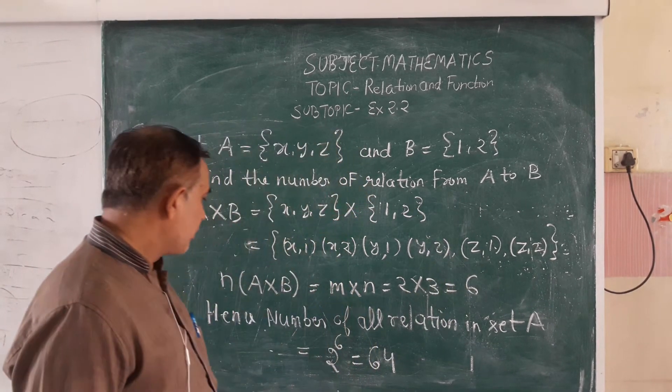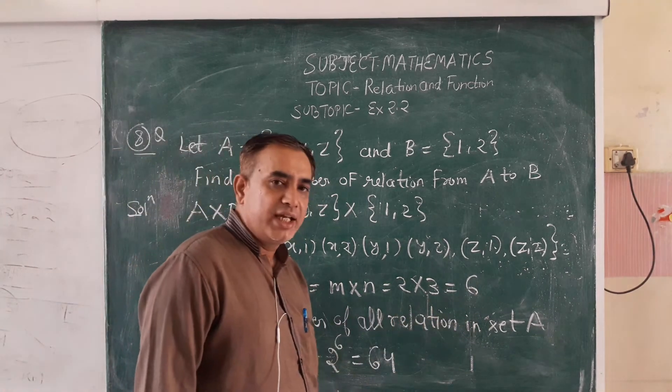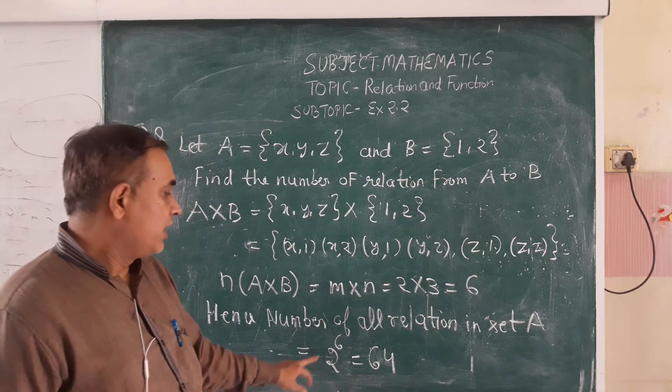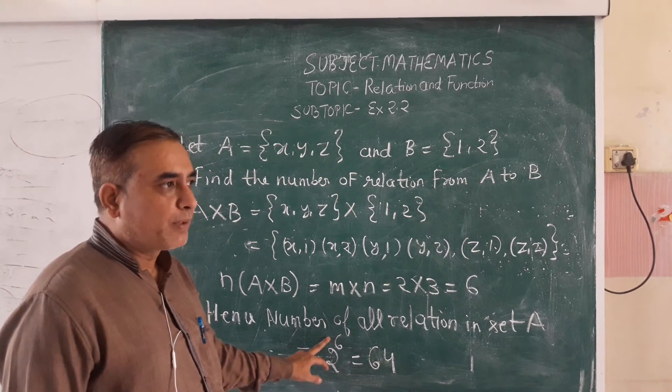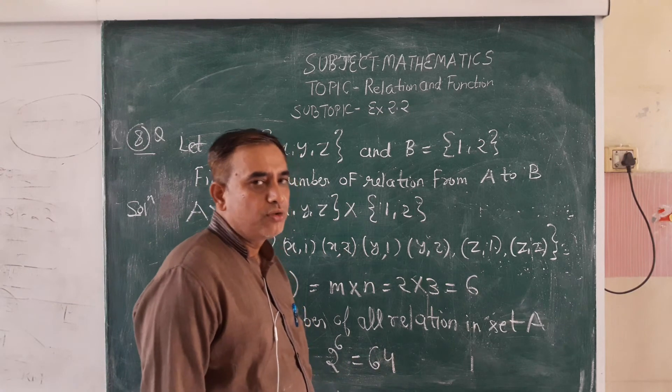Now, the number of all relations from set A to B will be 2 raised to power 6. If we compute 2 raised to the power 6, we get 64. Thank you, have a nice day.